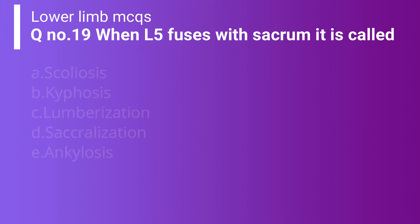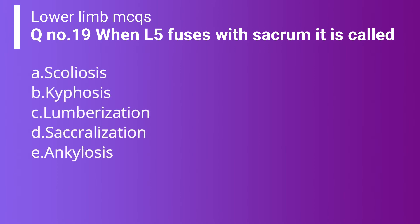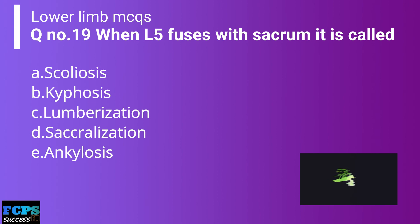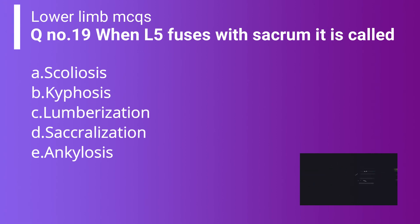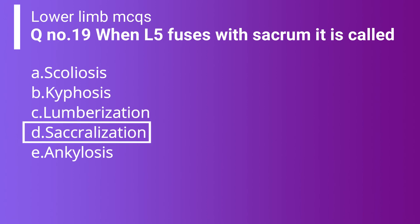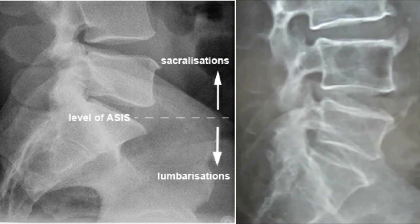Question number 19: When L5 fuses with the sacrum, it is called option A: scoliosis. Option B: kyphosis. Option C: lumbarization. Option D: sacralization. Option E: ankylosis. The correct answer is option D — sacralization.